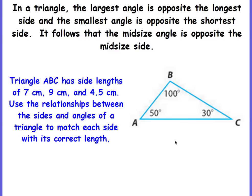We have a triangle here and we're given three of its angles. Triangle ABC has side lengths of 7 cm, 9 cm, and 4.5 centimeters. We're going to use this relationship of small side opposite small angle to match each side with its correct length.